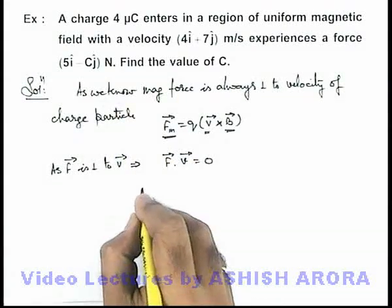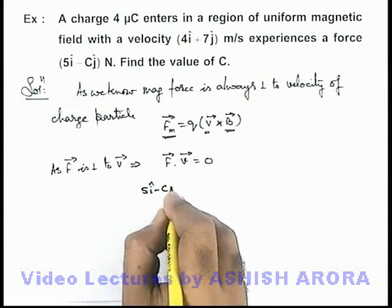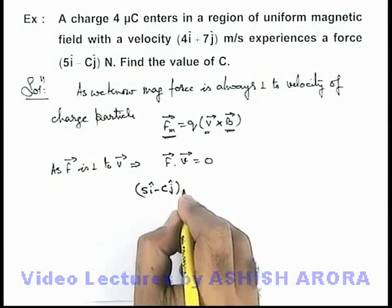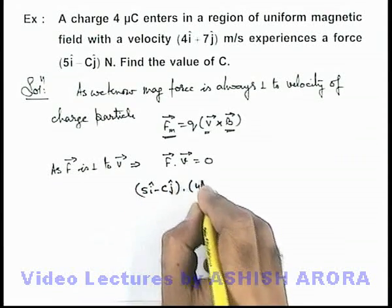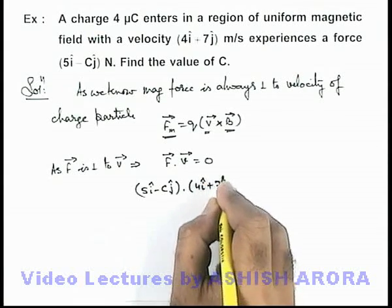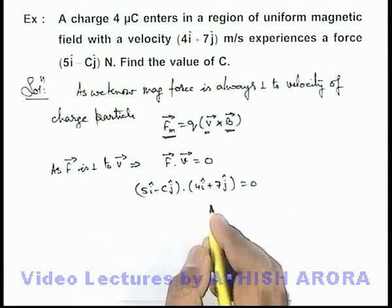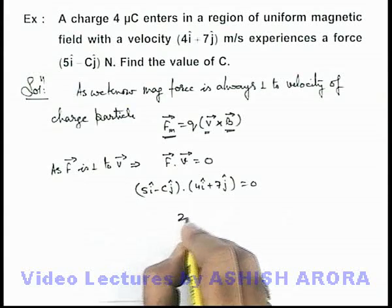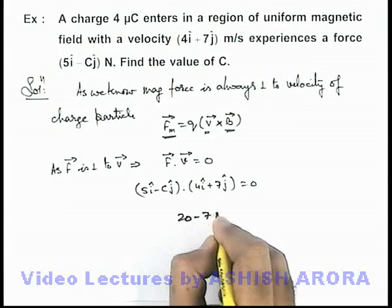So if we substitute the values, it'll be (5i - cj) dot product with (4i + 7j), which should be equal to zero. On simplifying, we are getting 20 - 7c = 0.